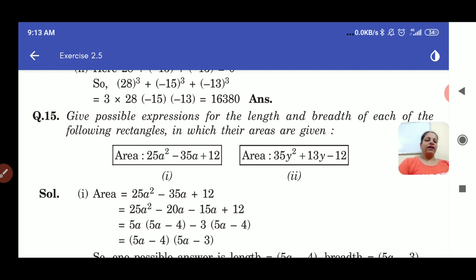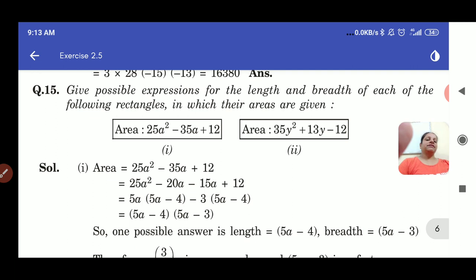So just see the solution. We have area is given 25a² minus 35a plus 12. Now here we are having minus 35a. We break this into minus 20 and minus 15. And we come to the factors as 5a minus 4 and 5a minus 3. So we say that these are the possible lengths and breadth of a rectangle.